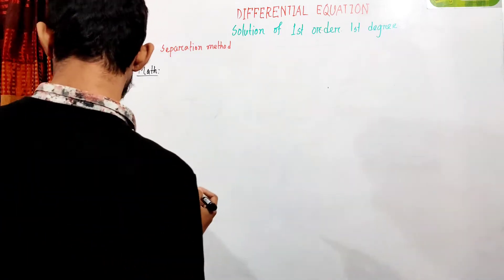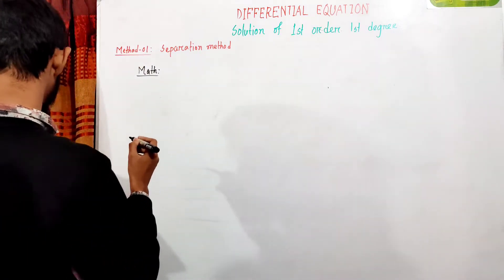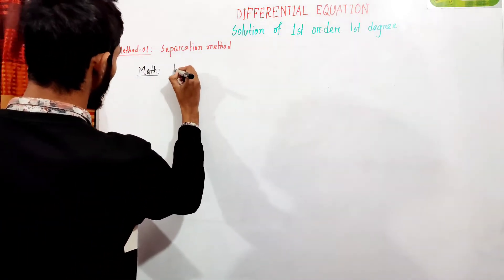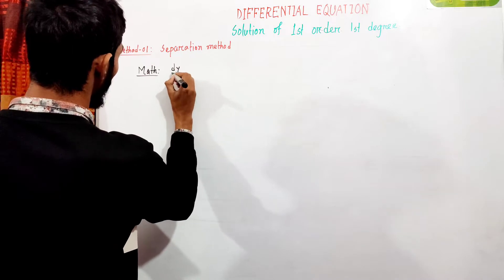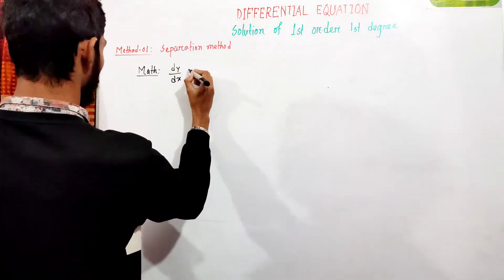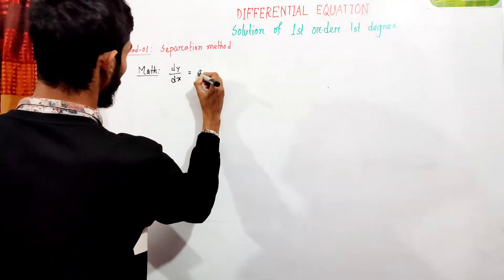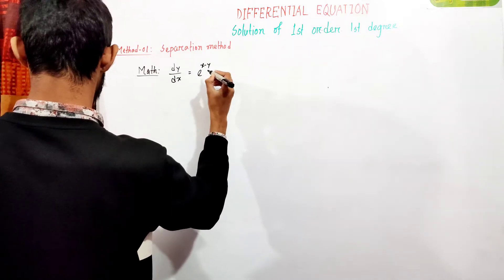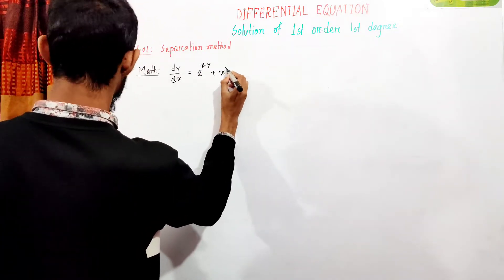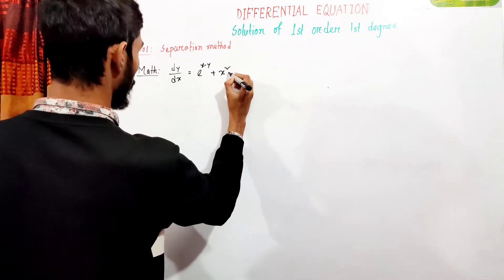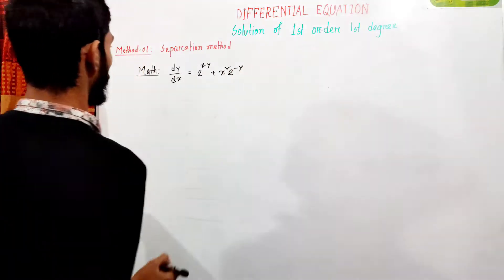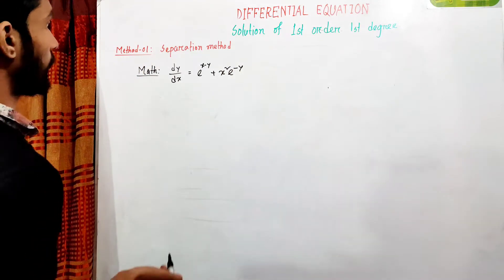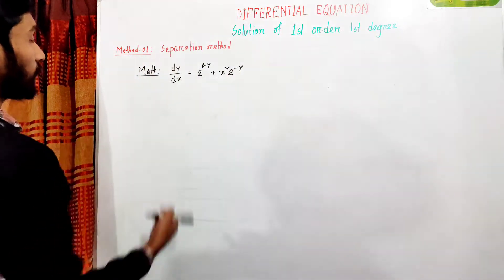My name is RET Math and I am going to solve problem 2. We have the differential equation dy/dx equal to e to the power x minus y plus x squared e to the inverse y. This is the general solution, and we will take the first order, first degree differential equation.